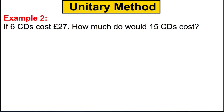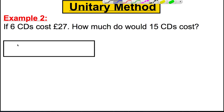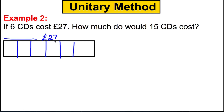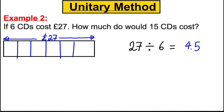Let's try another one. If 6 CDs cost £27, how much would 15 CDs cost? Let's always draw our picture — it helps us understand what's going on with the numbers. We have 6 CDs: 1, 2, 3, 4, 5, 6. All of those 6 CDs cost £27. Using our calculator, we take 27 and share it into 6 equal parts — 27 divided by 6 — and we get 4.5.